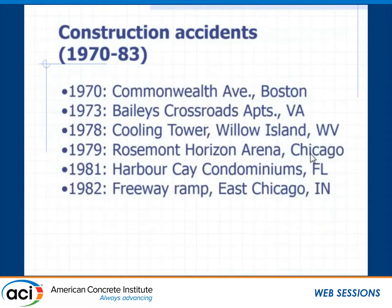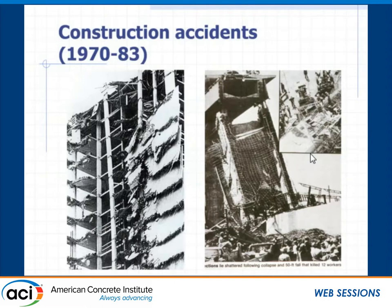Also during the same period, there were a lot of construction accidents: in 1970, Commonwealth Avenue; three years later, Bailey's Crossroads — the Skyline Plaza Apartments in Northern Virginia; the cooling tower under construction at Willow Island, West Virginia; Harbor Cay Condominiums; and a freeway ramp in East Chicago. What was particularly troubling is the patterns — Commonwealth Avenue, followed by Bailey's Crossroads, followed by Harbor Cay Condominium — all punching shear failures. And somewhere along the line, the lessons didn't really seem to have been picked up. This is Skyline Plaza and some of the remains from that particular collapse.